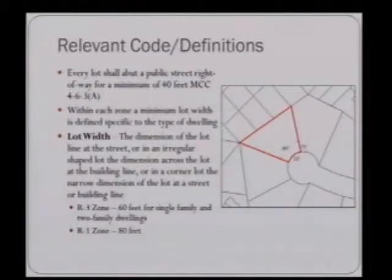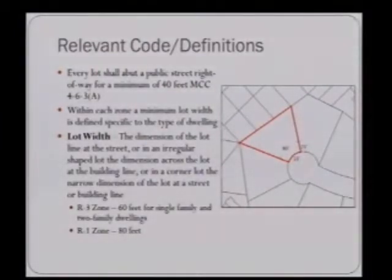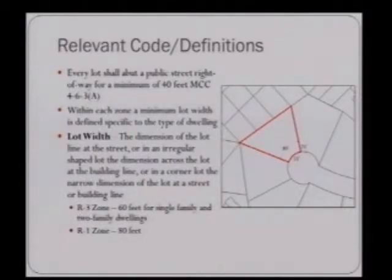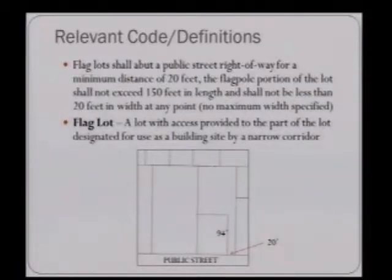The example here on the right is a parcel within the R1 zone — an example of an irregular-shaped lot, typically found adjacent to cul-de-sacs. As you can see, the parcel abuts the cul-de-sac at a width of 53 feet, meeting the minimum 40-foot requirement. When the front yard setback of 25 feet in the R1 zone is applied, that establishes the building line where lot width is measured — here at 80 feet, which is the minimum lot width for R1. Additionally, flag lots shall abut a public street right-of-way for a minimum of 20 feet. The flagpole portion shall not exceed 150 feet in length and shall not be less than 20 feet in width at any point. There is no maximum width specified for the flagpole portion.